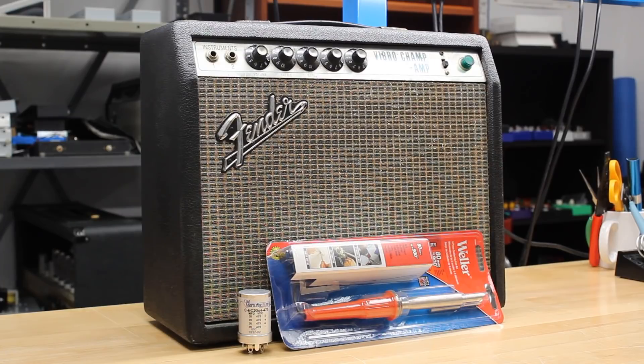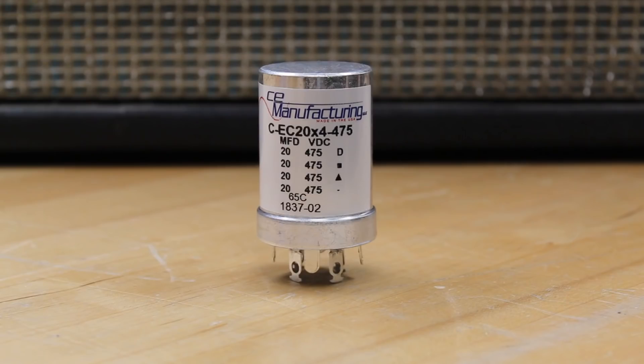For this first repair, we will be using an 80 watt Weller soldering iron and a CE manufacturing CAN capacitor, made in the USA to the original Mallory specifications. The links to both items are in the description of this video.